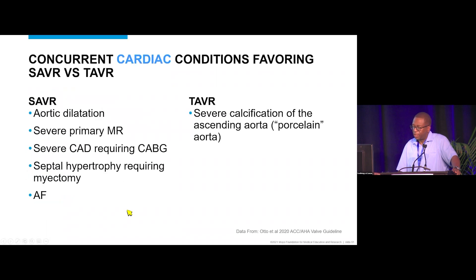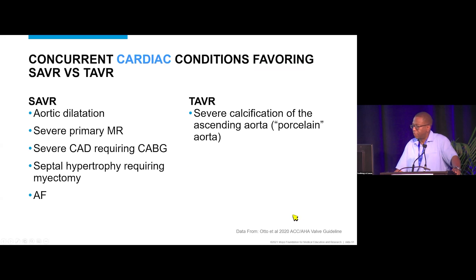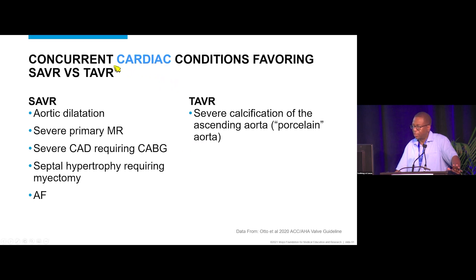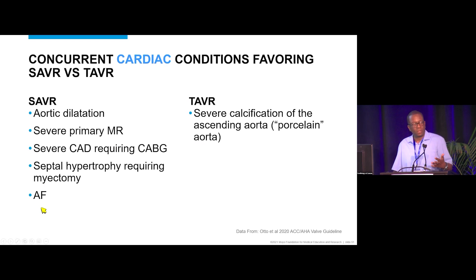Complicating management further are the ACC/AHA Valve Guidelines on management of patients with valve disease. Just as TAVR is not for everyone, the guidelines list atrial fibrillation as a concurrent cardiac condition favoring SAVR over TAVR — so that a MAZE procedure can be performed, the mitral and tricuspid valves repaired, and left atrial appendage ligation considered.